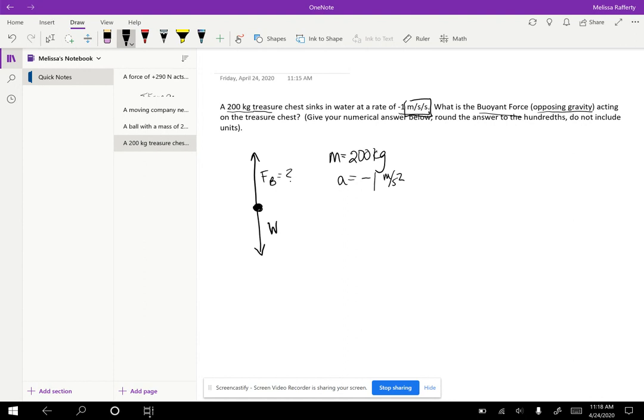But we don't know weight, but we can calculate it. Remember, that's always step two in a vertical motion problem. Step one, draw the free body diagram. Step two, calculate weight. So weight is mass, 200 kilograms times gravity, which is 9.8. So we have 200 times 9.8. That gives us a weight of 1960, 1,960 newtons.